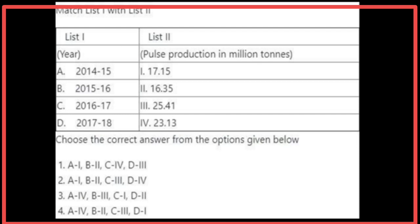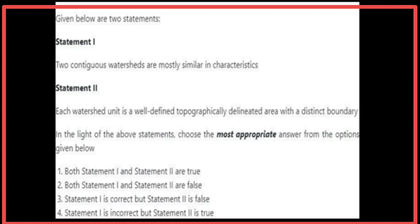Matching List 1 with List 2: The years are matched with their pulse production in million tons. In 2014–15, pulse production was 17.15 million tons. In 2015–16, it was 16.35 million tons. In 2016–17, it was 23.13 million tons. In 2017–18, it was 25.41 million tons.